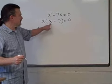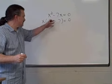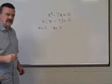Our other solution would be x equals seven. Seven minus seven would give us zero. Zero times anything would be zero, and we have the two solutions to this problem.